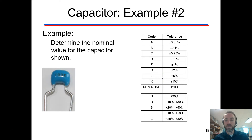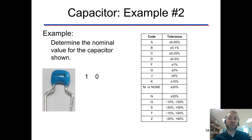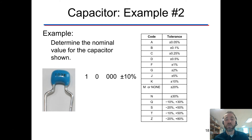One more time — try this one. You're going to have a one, a zero, then three more zeros: 10,000 picofarads, with K meaning plus or minus 10 percent.